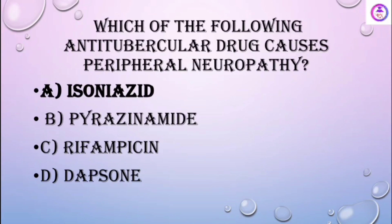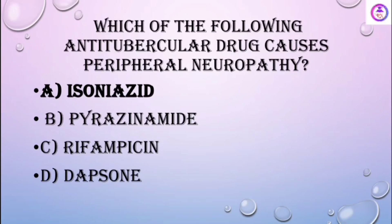Which of the following antitubercular drugs causes peripheral neuropathy? Isoniazid is known to cause peripheral neuropathy.